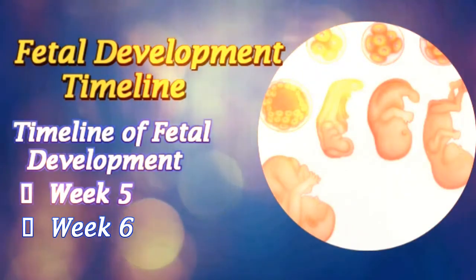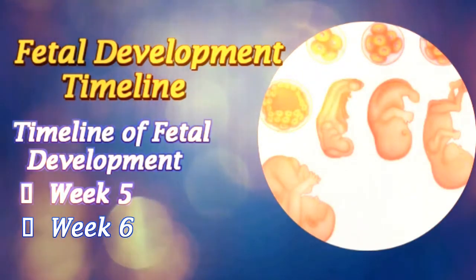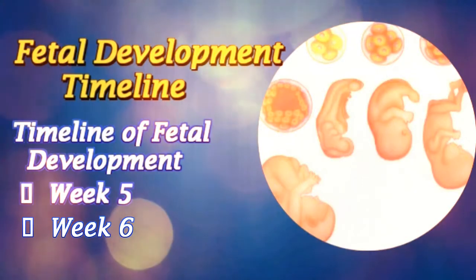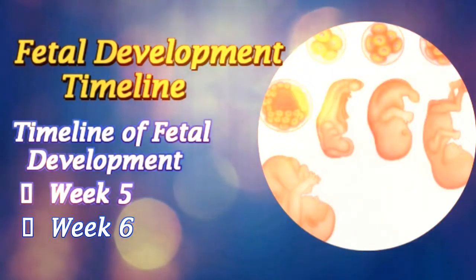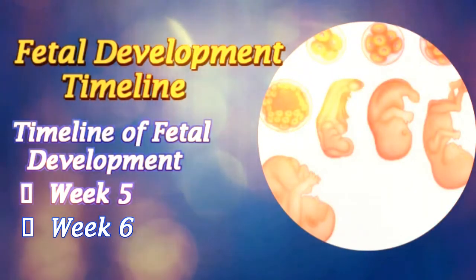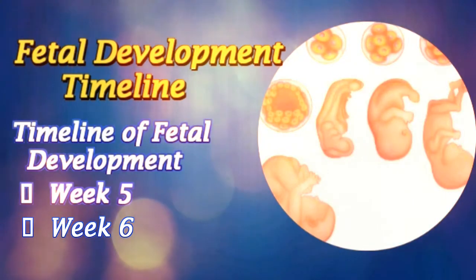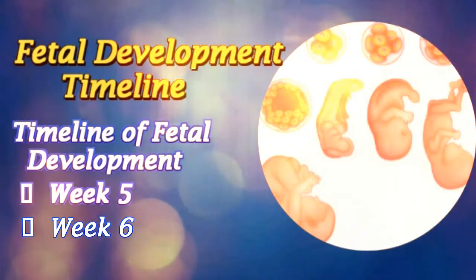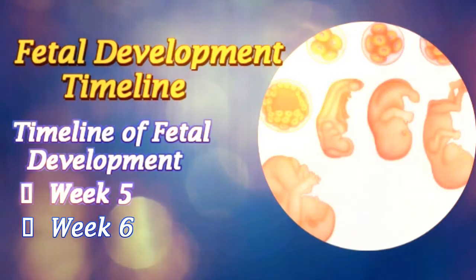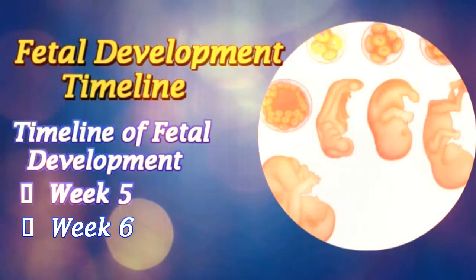Week 6: The embryo measures around 4 mm and begins to bend to form a C shape. The heart bulges and begins to beat. The neural tube closes and the ears begin to form otic pits. First traits of lungs, liver, and spleen appear.